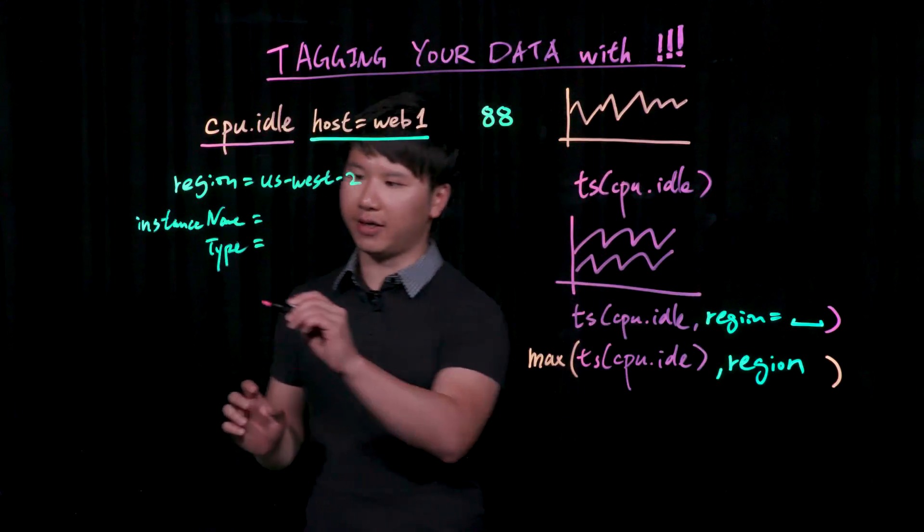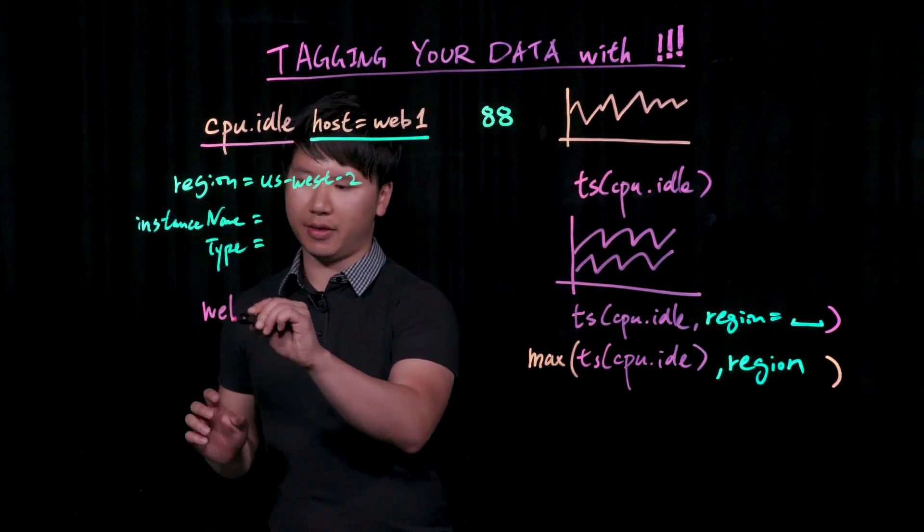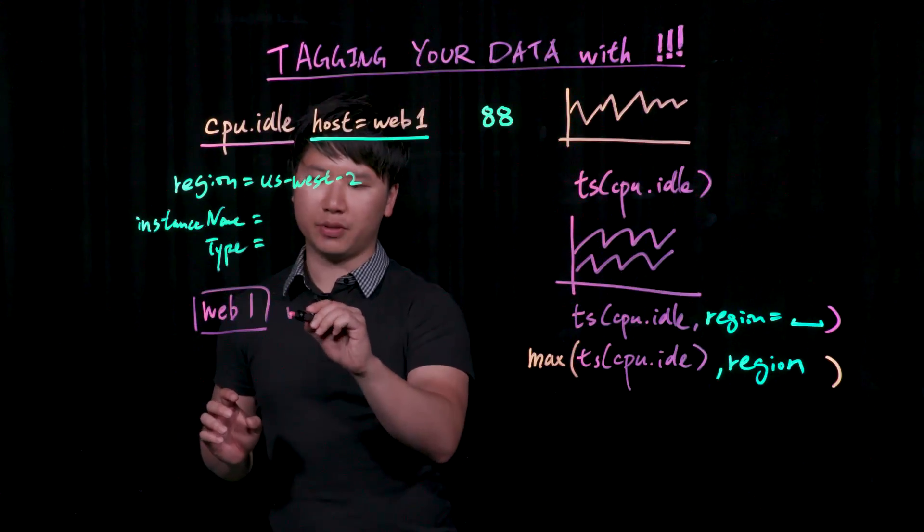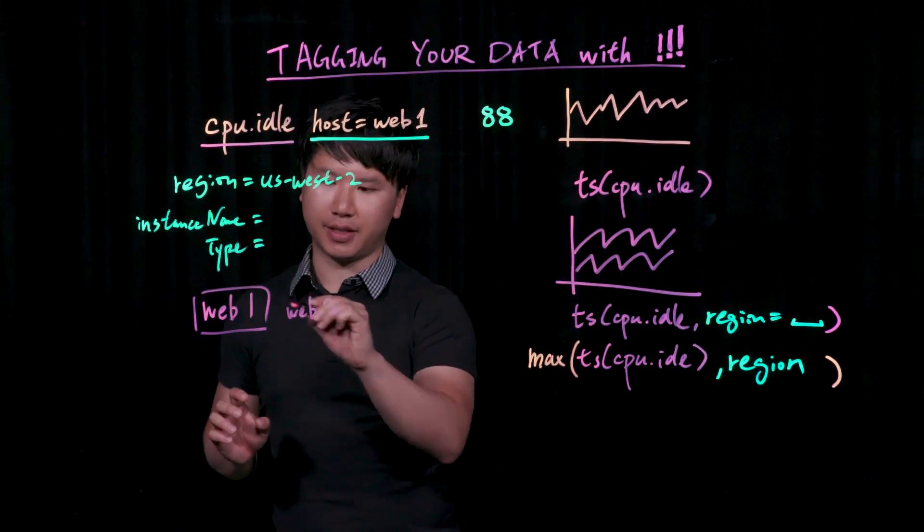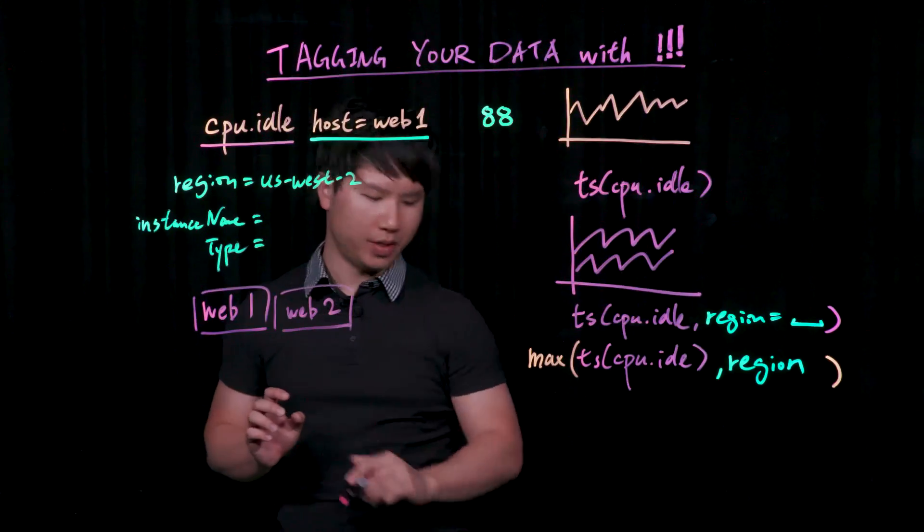Let's say, for example, you have a cluster of machines, and they all belong to your web serving tier. And in this example, let's say that we have two machines. They are called web1 and web2.